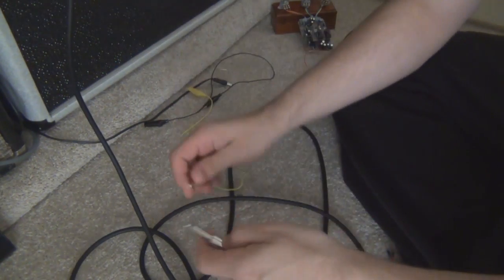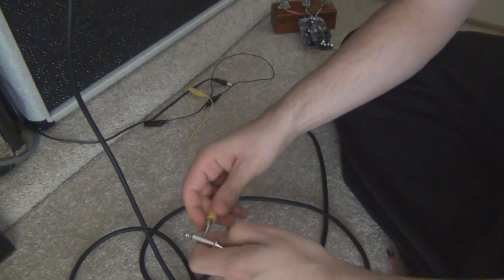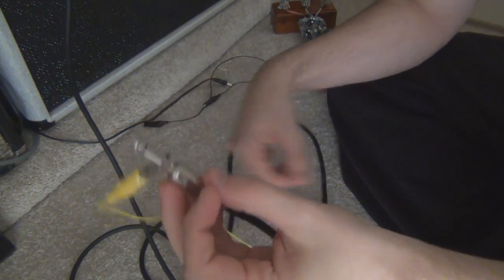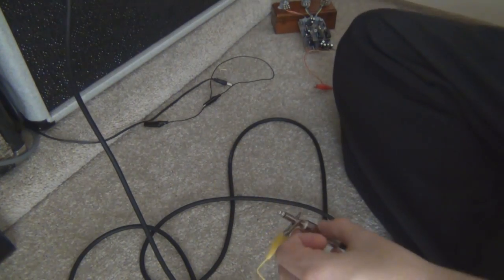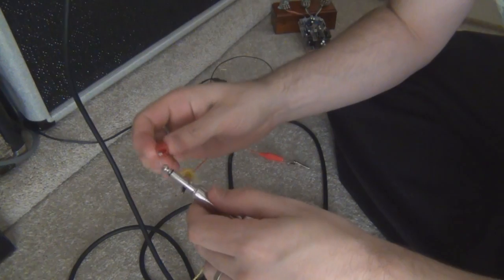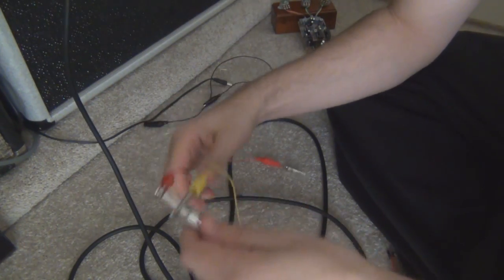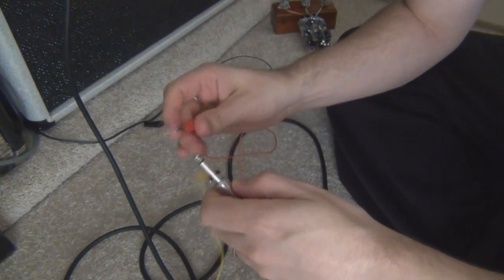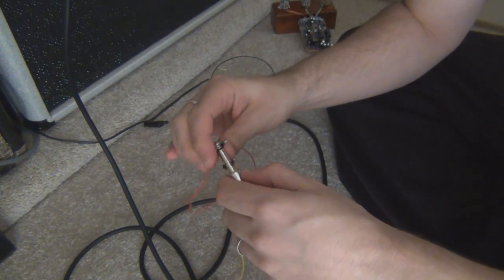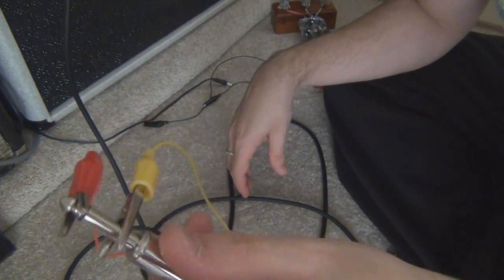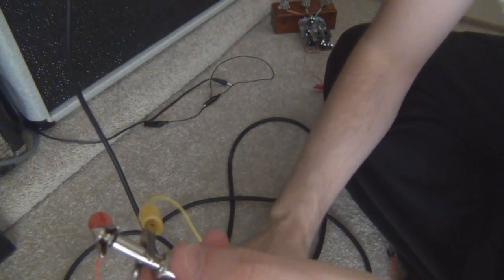But when I usually do it, I just do a sort of temporary measure and just put an alligator clip on the shield of the cable and then another one on the tip. As you can see, this is why actually soldering it might be a better option for you. But once it's on there, it's usually okay. You're tapping into the tip and the shield.